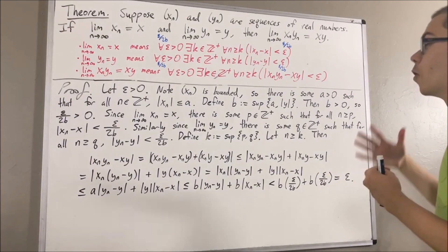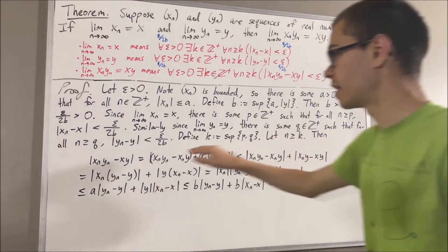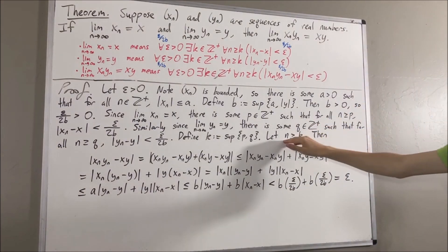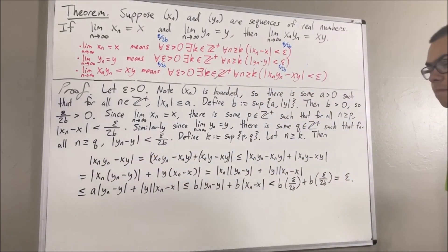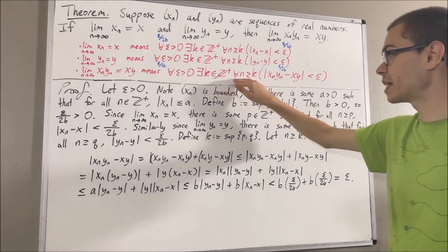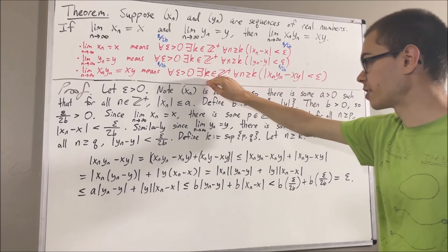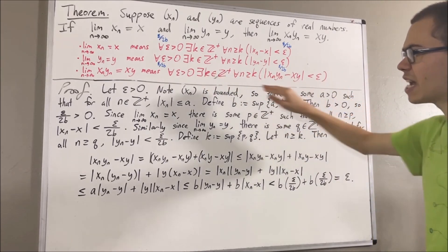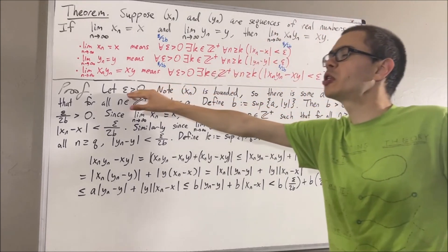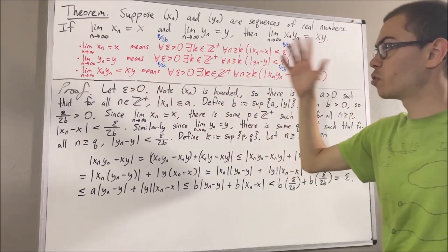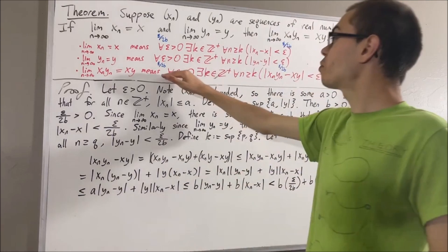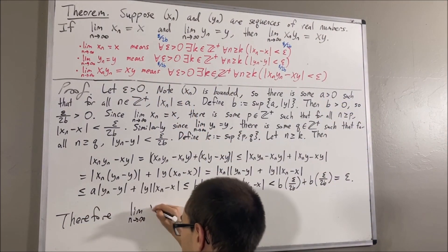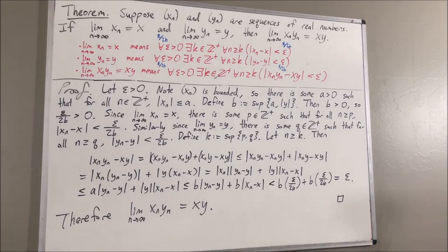Now let's put this together. Under the assumption that n is greater than or equal to k, we have shown that the absolute value of xn yn minus xy is less than epsilon. Since n was arbitrary, this means we have shown for all positive integers n greater than or equal to k, this holds. So we have found a positive integer which makes the statement turn out true — namely, the bigger of p and q. This statement was shown true for an arbitrary epsilon greater than zero, so for all epsilon greater than zero this is true. We have proven that xn times yn converges to x times y. This completes the proof.